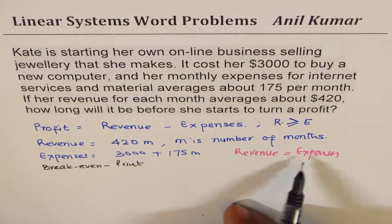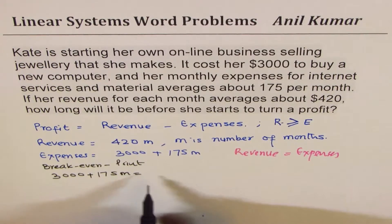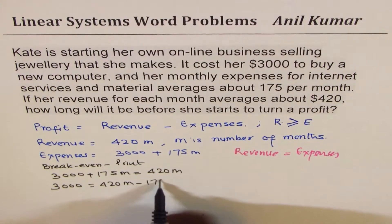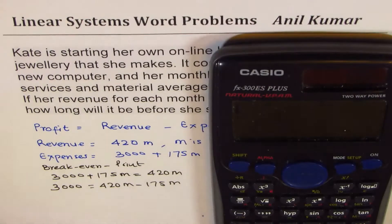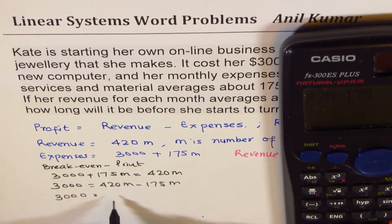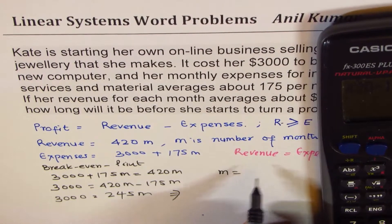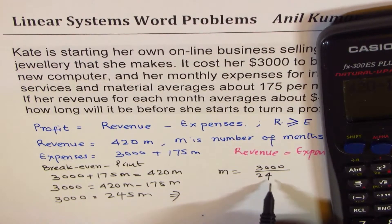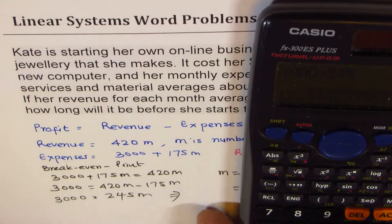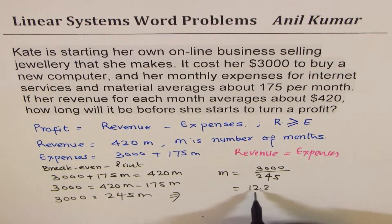For that, let's equate the two because revenue should equal expenses. We can write this as $3,000 plus $175M equals $420M. Bringing it to the right, we get $3,000 equals $420M minus $175M. So $420 minus $175 is $245M. So we have $3,000 equals $245M, and that gives us the value of M. So M equals $3,000 divided by $245, which is approximately 12.2 months — so more than 12 months.